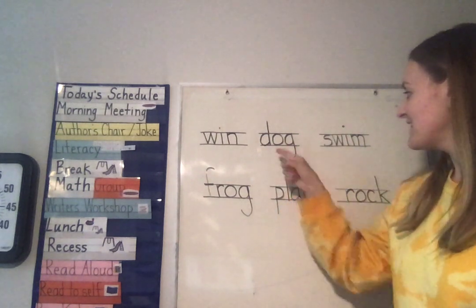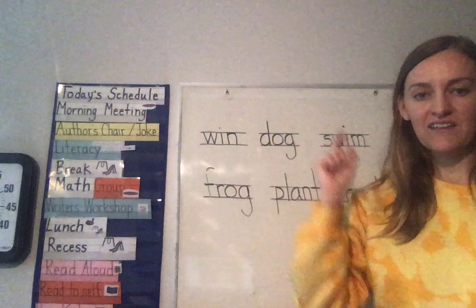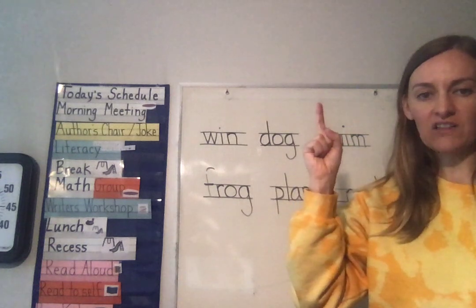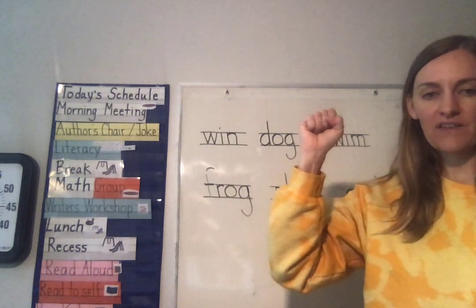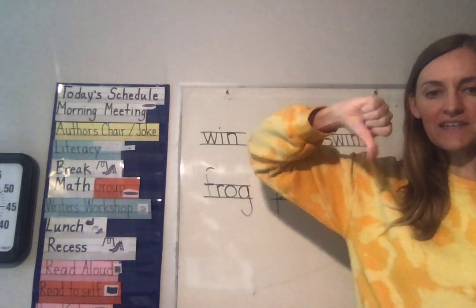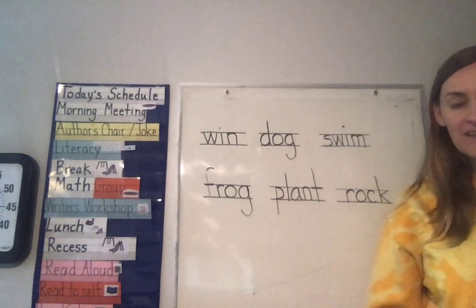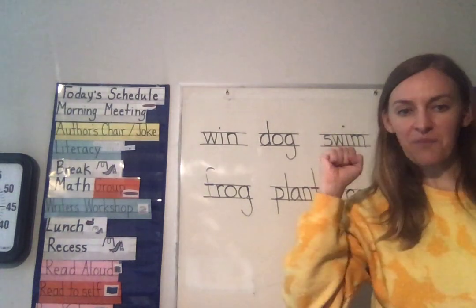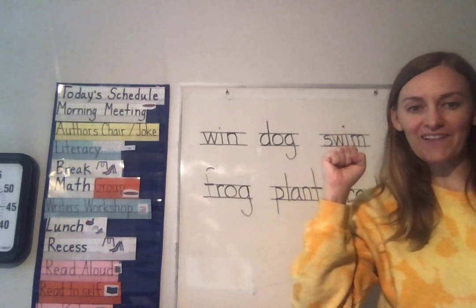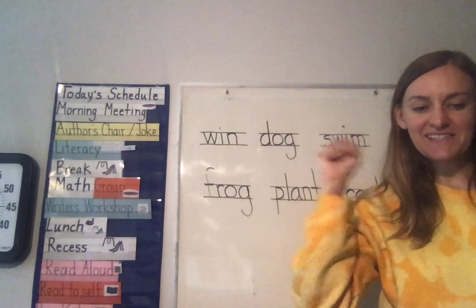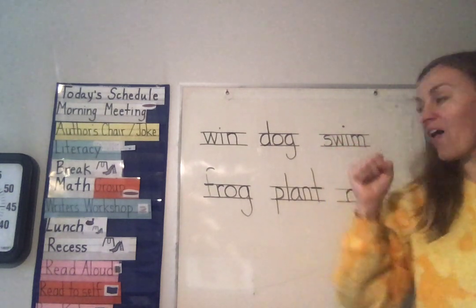And then 'dog.' D — tall, O — small, G — descending. Swim. S — small, W — small, I — small, M — small.